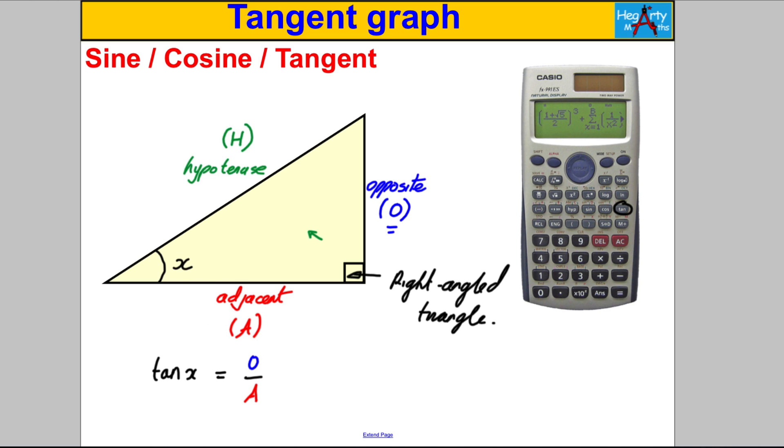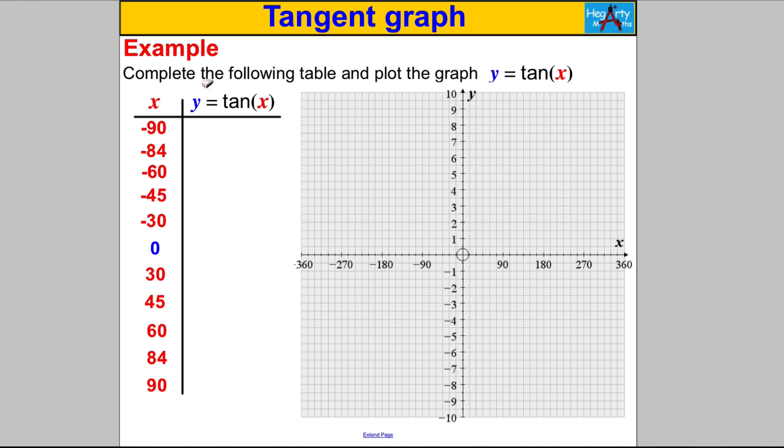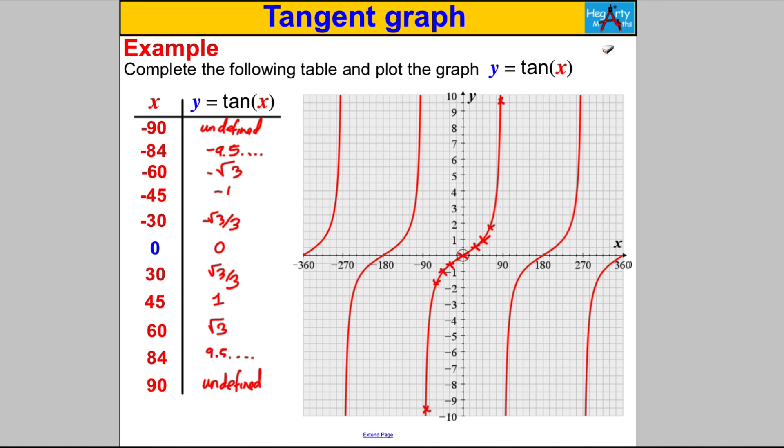For different values of x, we're going to start with the table. Pause the video and for x between -90 and 90, try and draw the tan graph there for us by substituting in and plotting it on the curve. You should have got something like this.